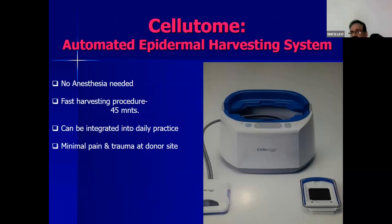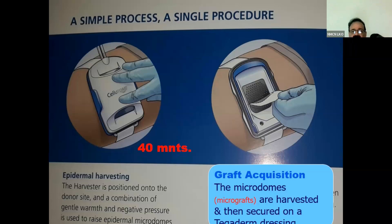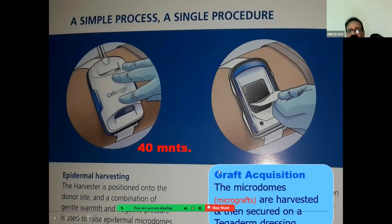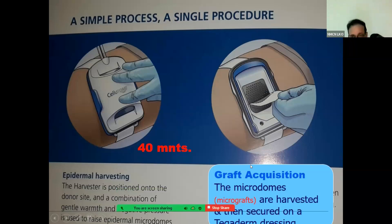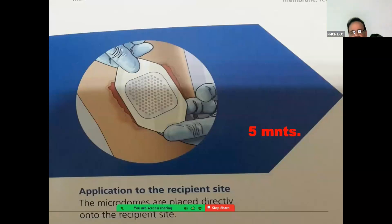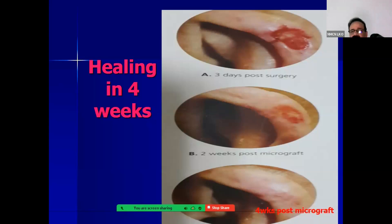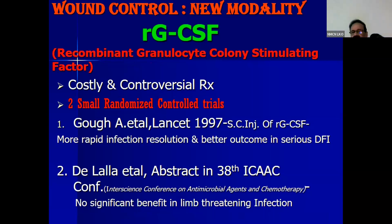Celltome is also a new modality — an automated epidermal harvesting system in which no anesthesia is needed. The harvester is positioned onto the donor site and a combination of gentle warmth and negative pressure is used to raise epidermal microdomes. Over these microdomes, a Tegaderm dressing is placed and they are harvested and applied over the wound. This is a very simple technique for small wounds and is effective.